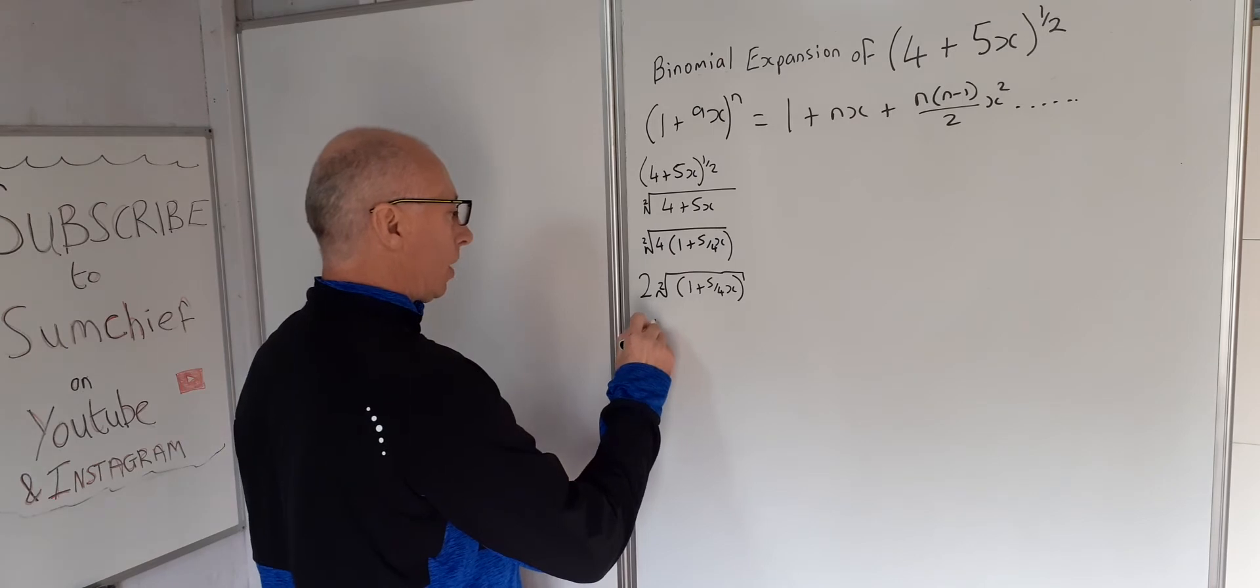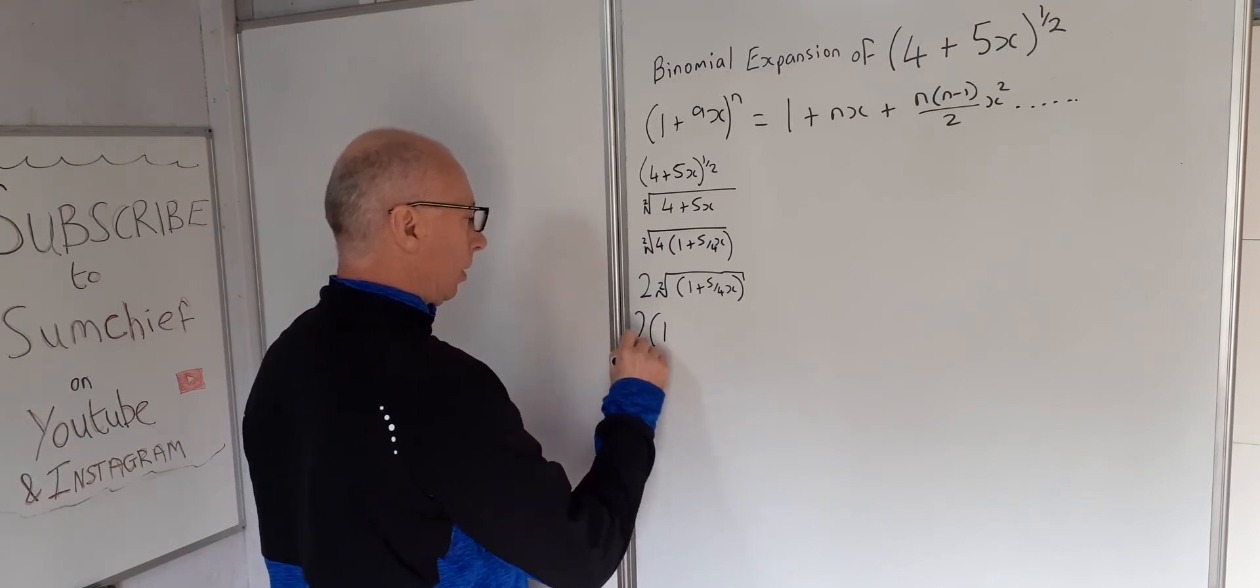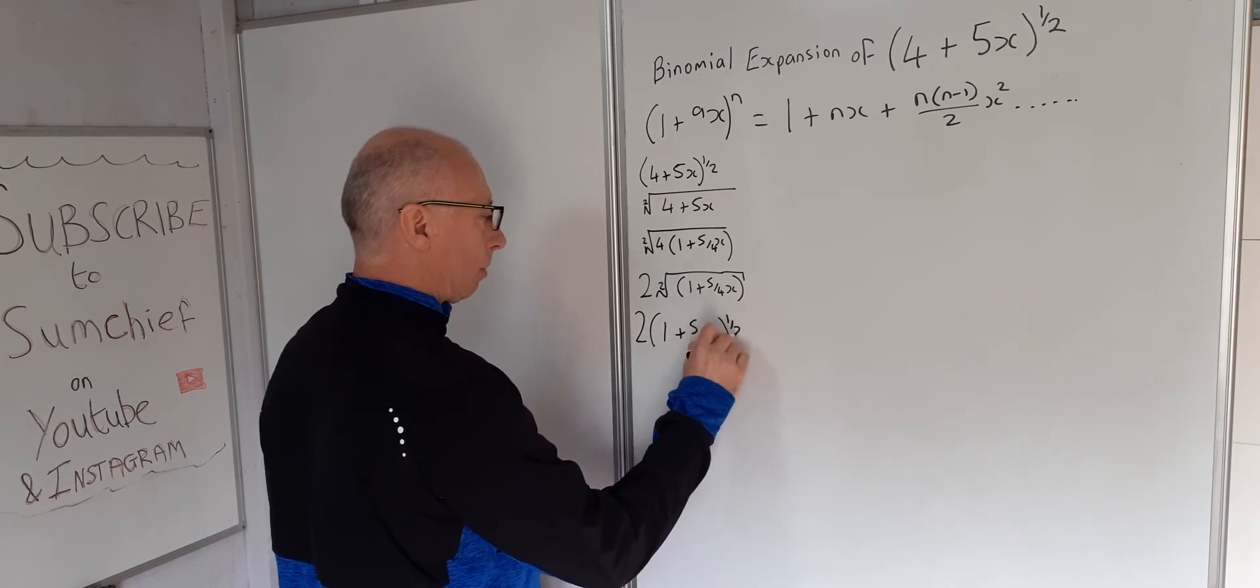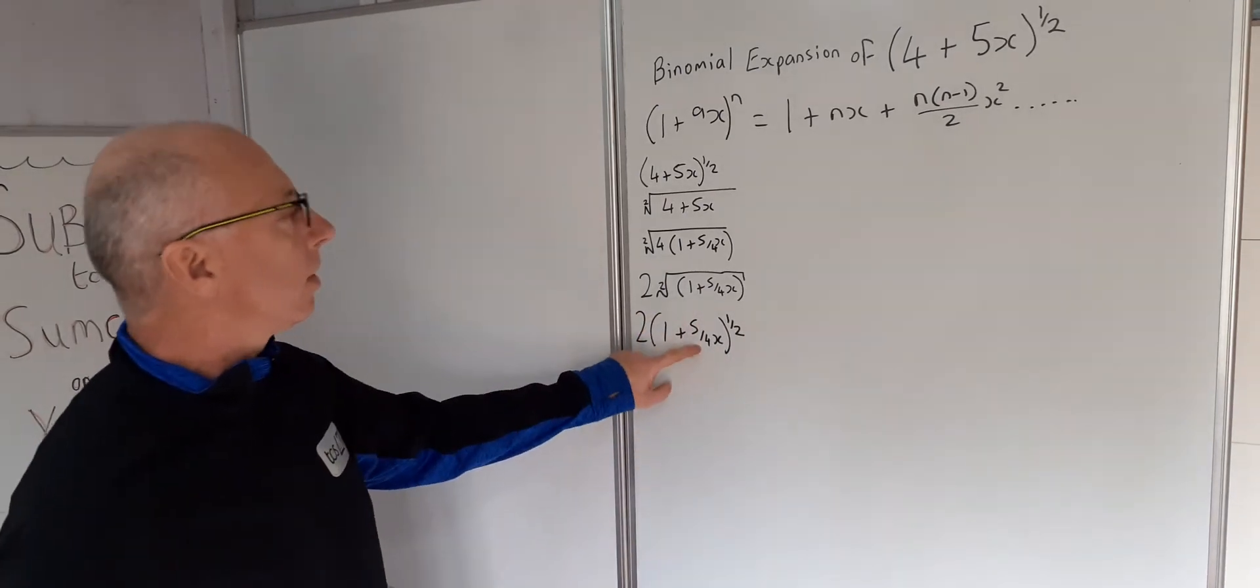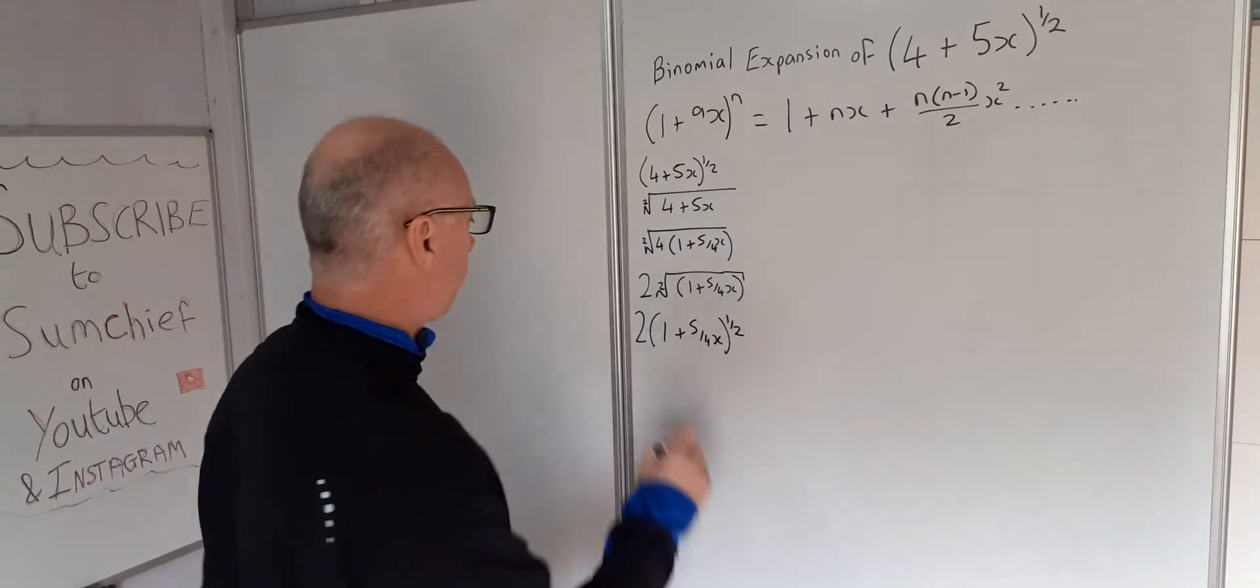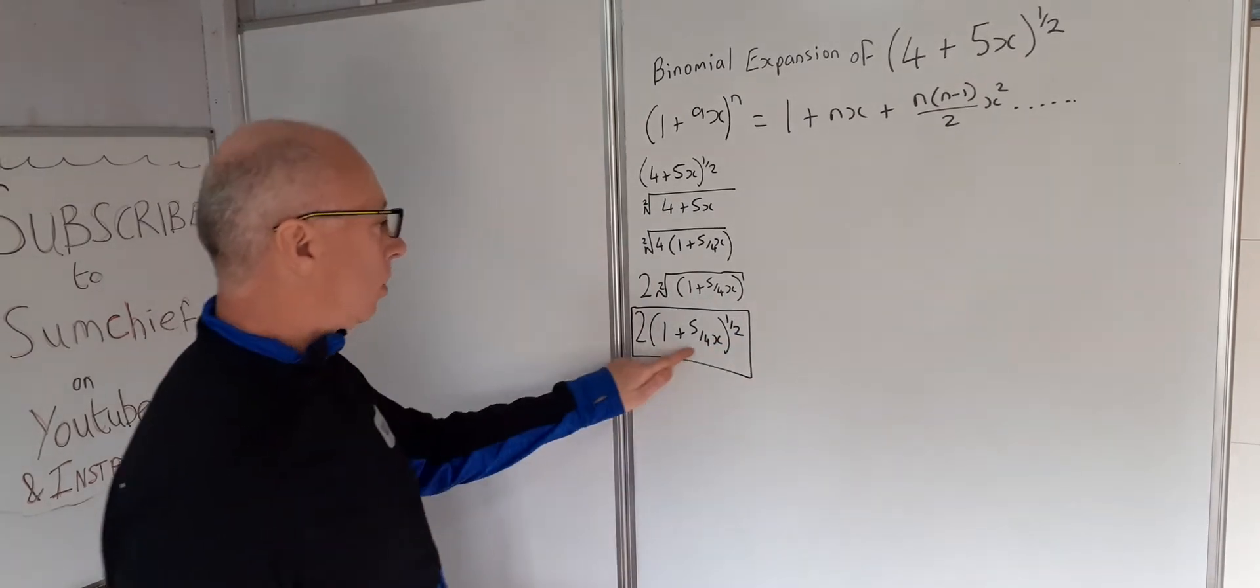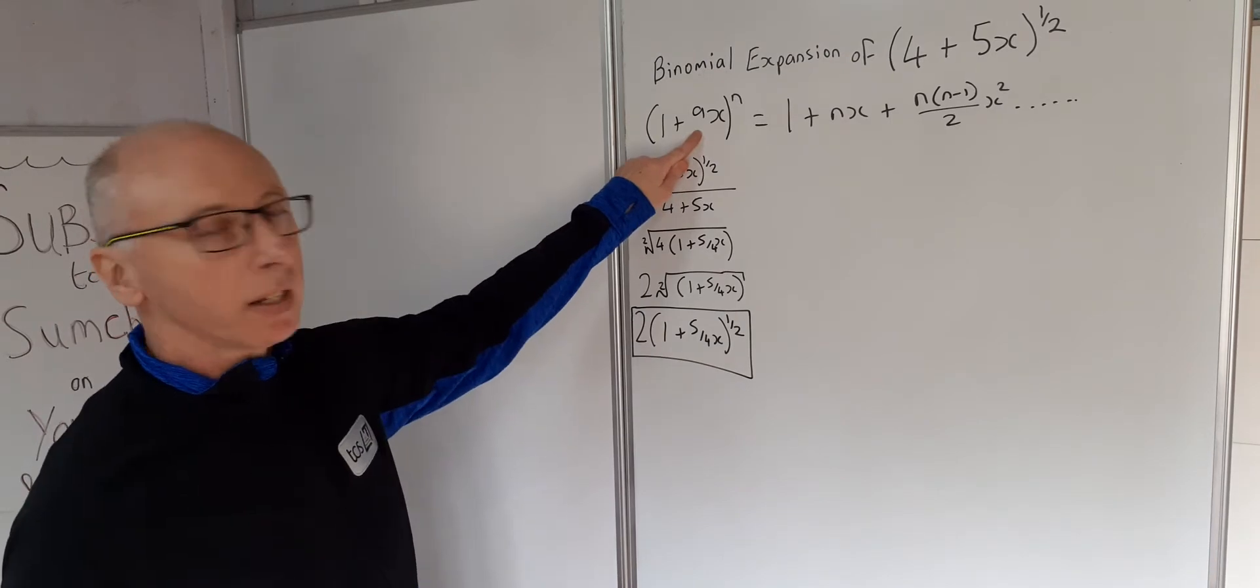So now we've got this all nice and clean inside the radical there. So now what we do, we can just write this as 1 plus 5 over 4x to the power of a half. So this is now the same as this.